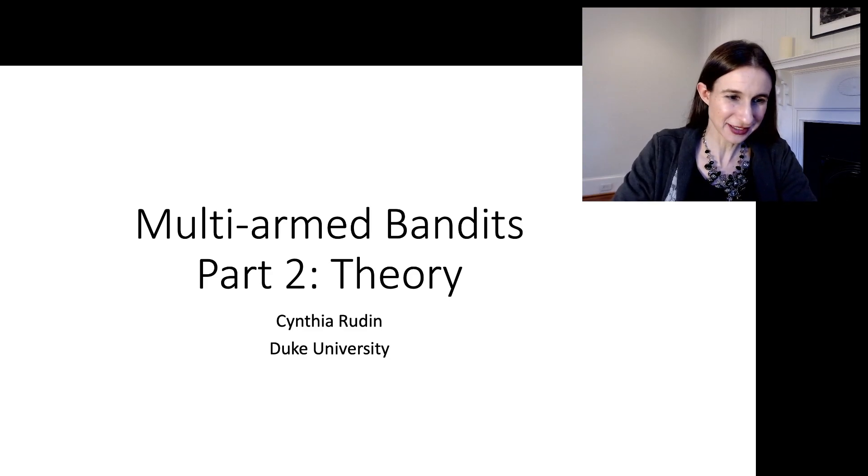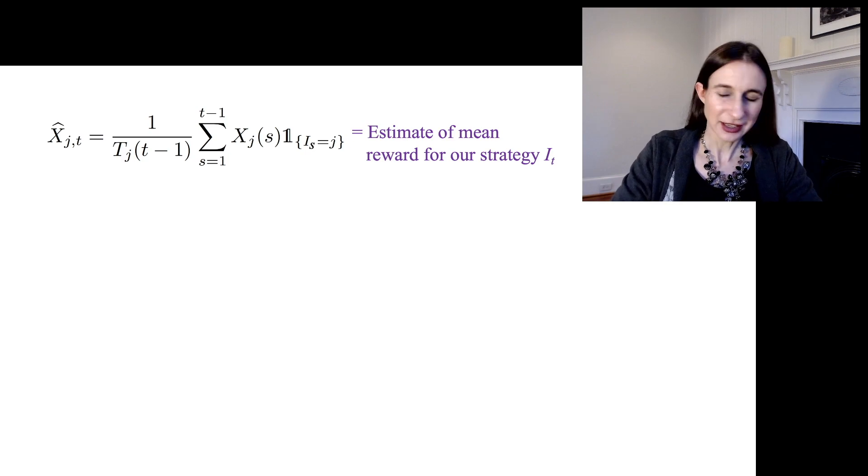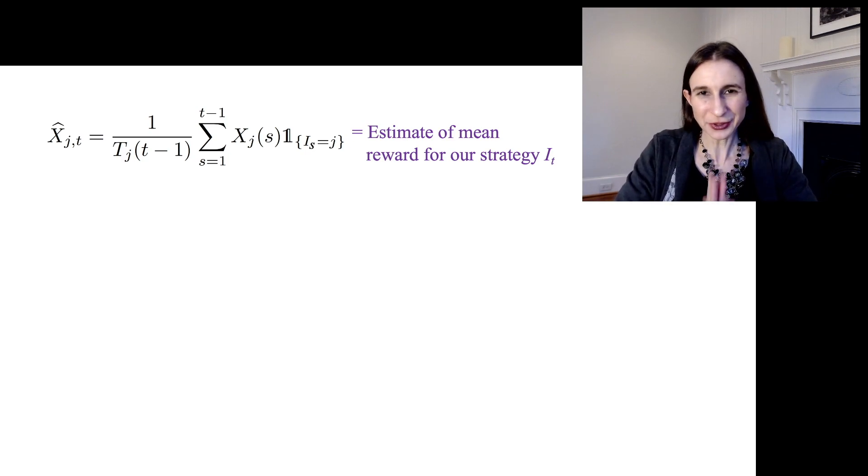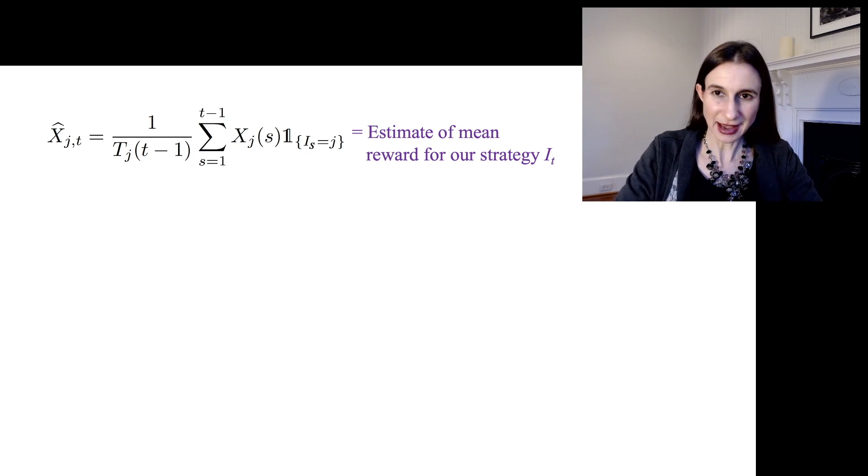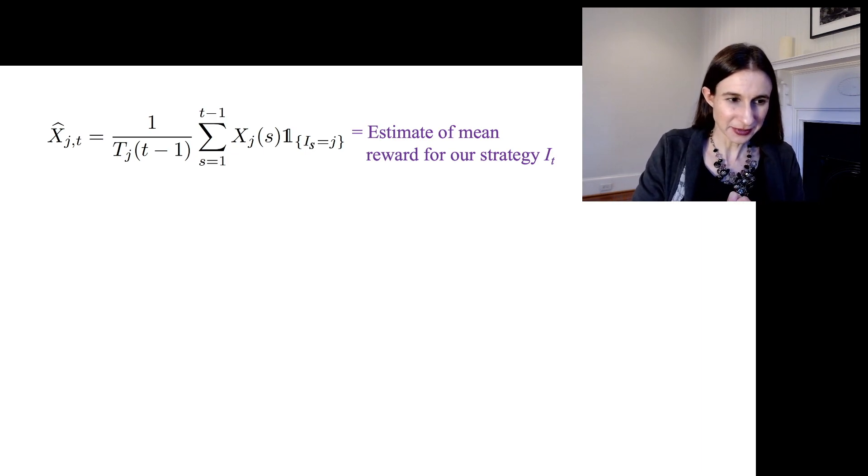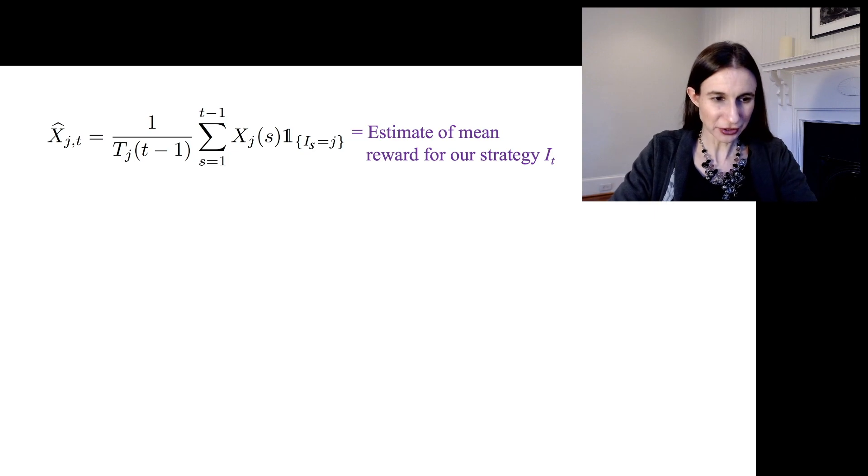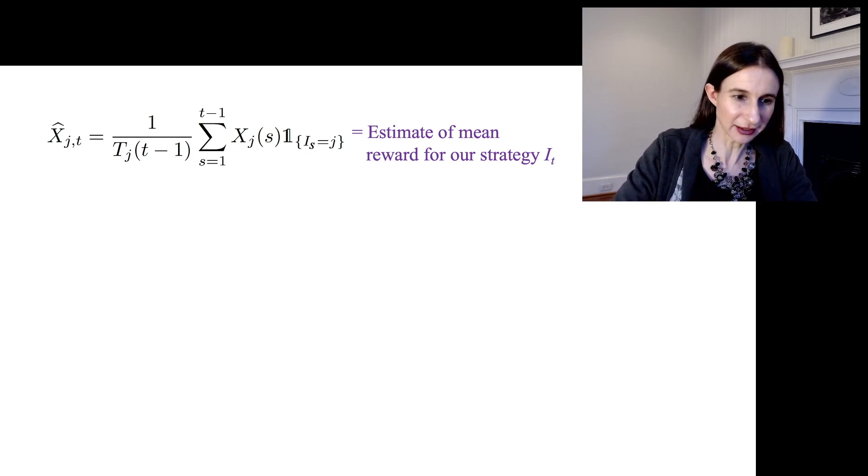Let's do some theory for multi-armed bandits. I need to define how good we think arm j actually is. So x̂ for arm j at time t is this average of rewards that we've gotten for all of the times that we've played arm j.